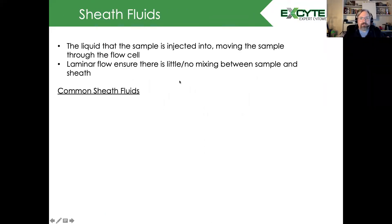Sheath fluid is the liquid that the sample is injected into, moving the sample through the flow cell. We require laminar flow to ensure there's little or no mixing between the sample and sheath fluid, and we'll talk about that in just a second.